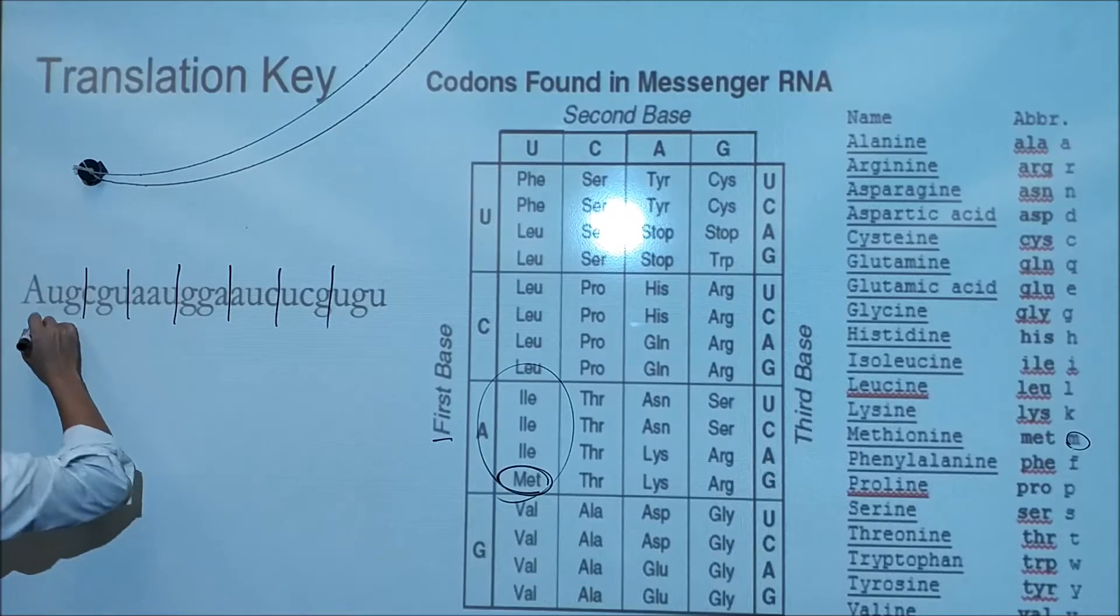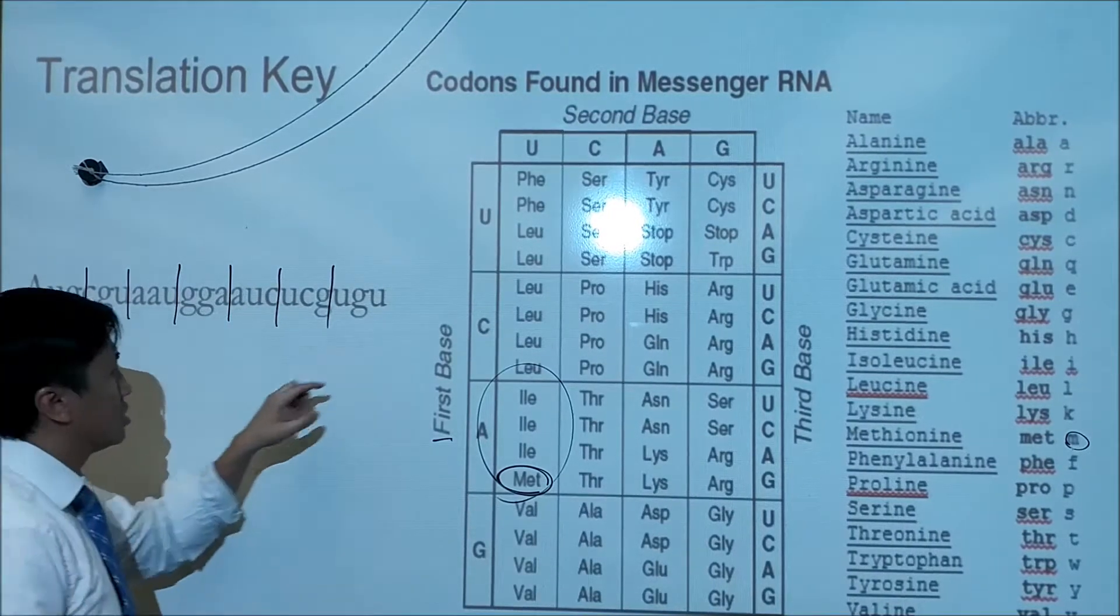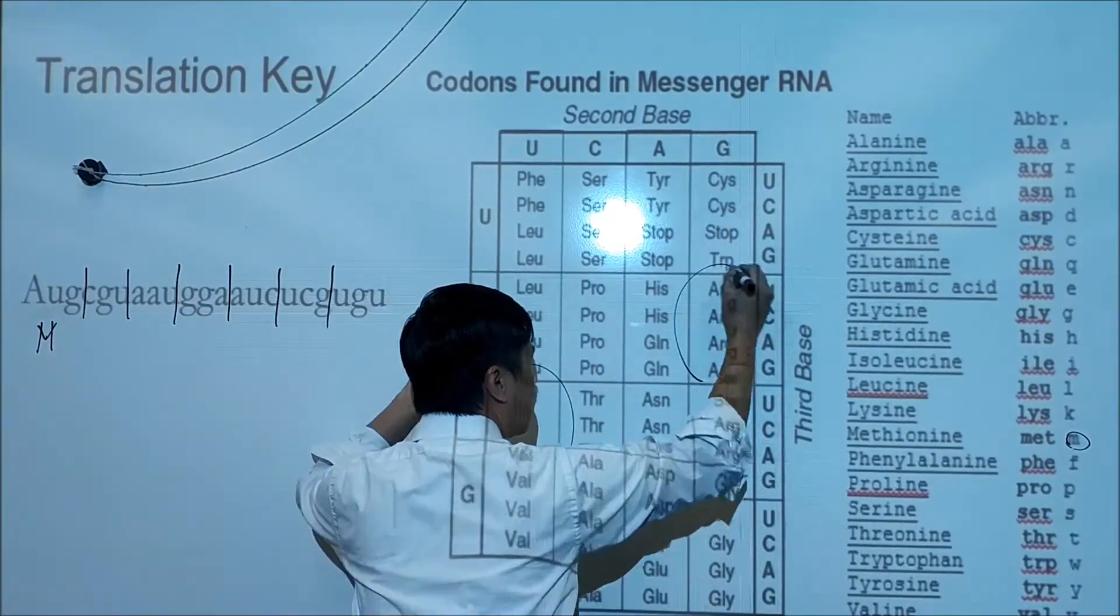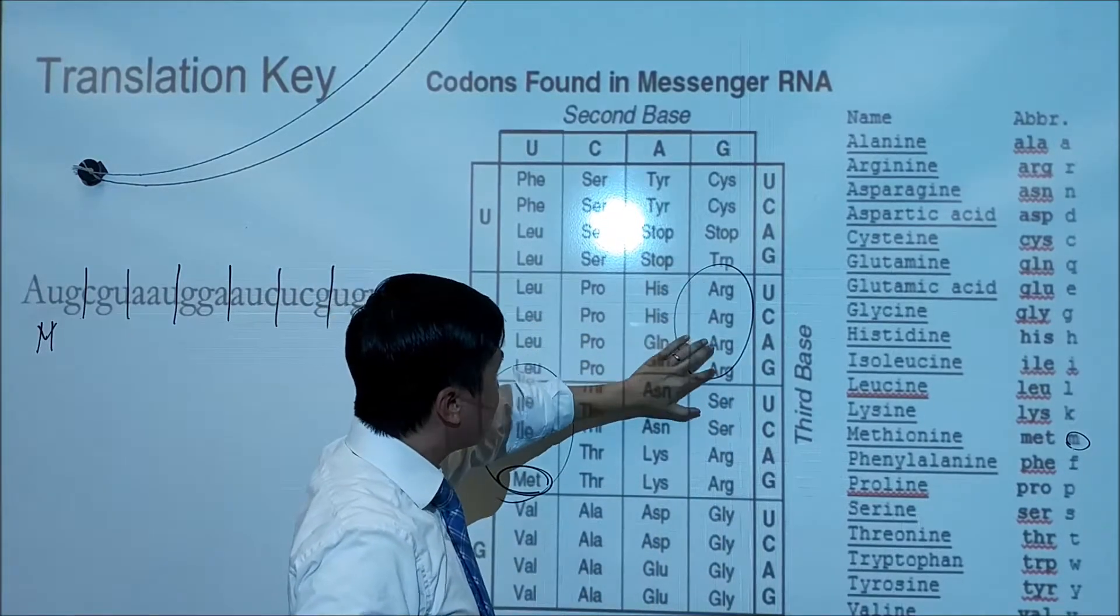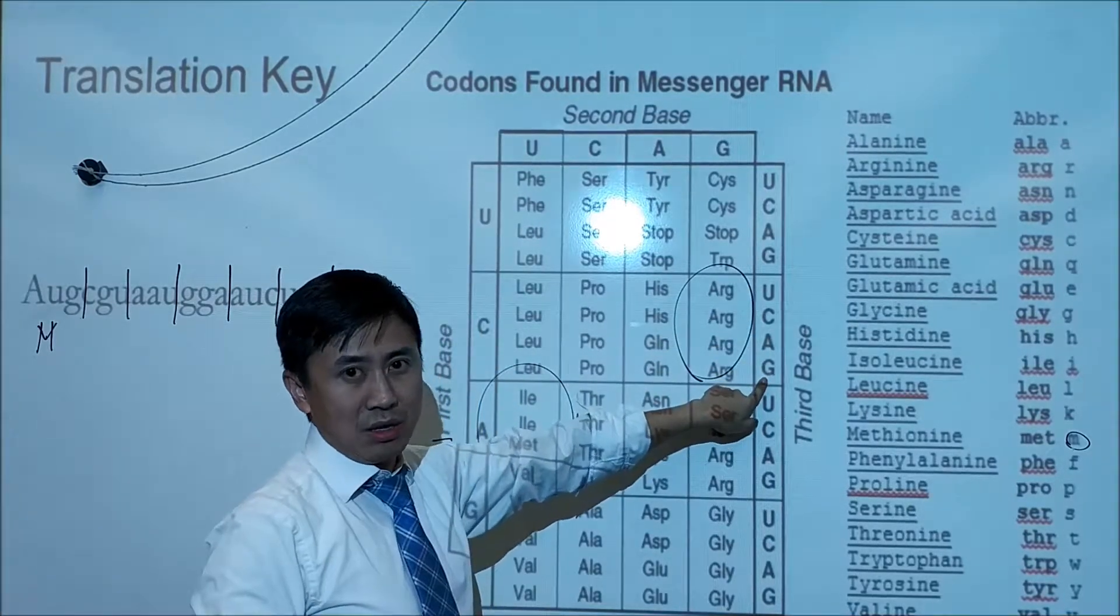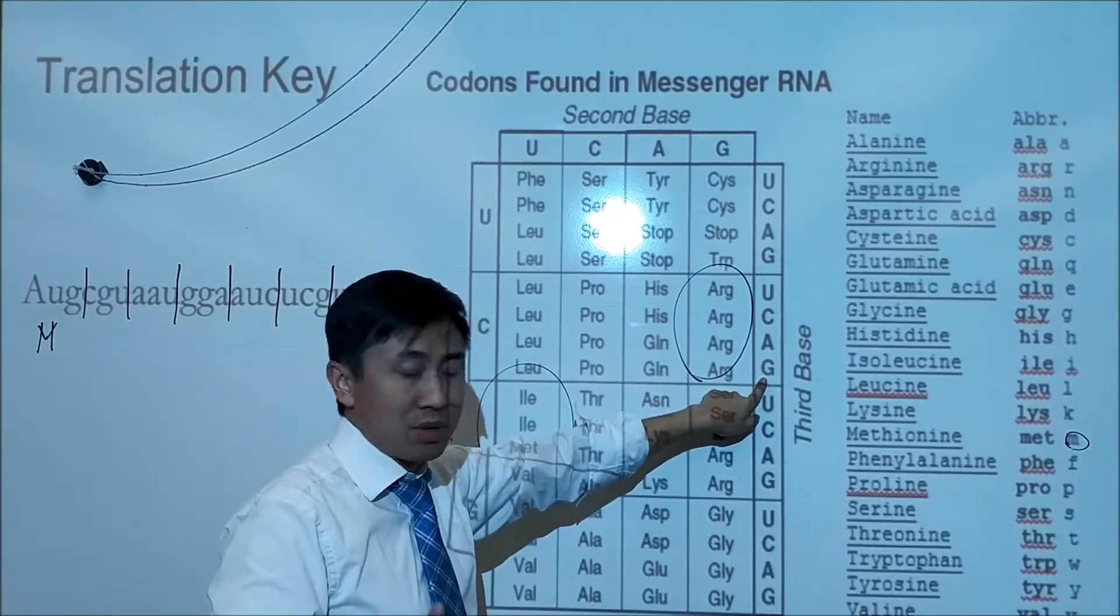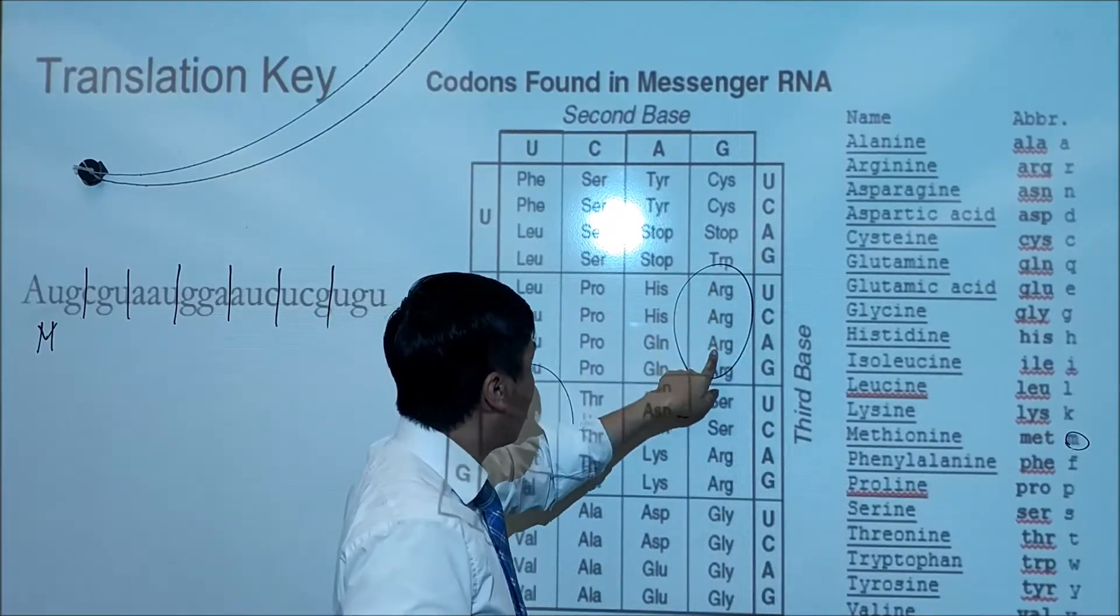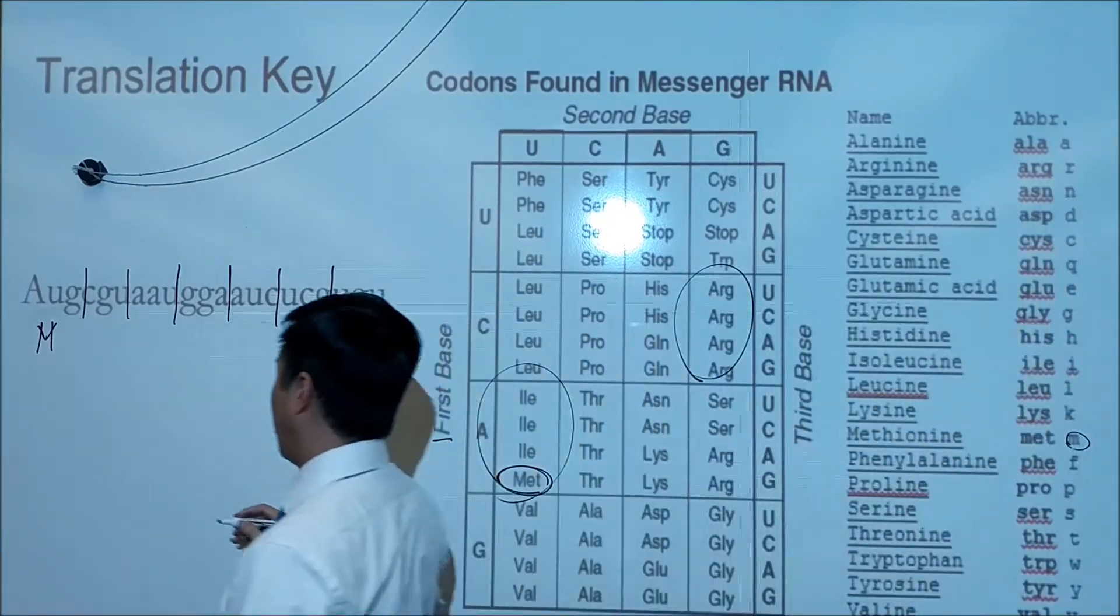Let's try that again. CGU: this row C, this column U, and G—it's in this box. Here's what you should notice: everything in this box is arginine because sometimes the last base does not matter. We call this the wobble. The last base sometimes doesn't matter, which is kind of a good thing because when you have mutations on that last base, it doesn't really affect you. So here, arginine—the single-letter designation is R.